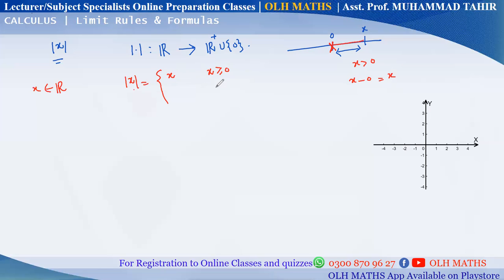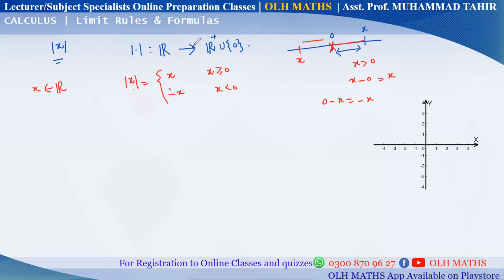And if x is negative, then to find the distance from x back to zero — the distance of x from zero — it is zero minus x, which gives minus x. So the absolute value of x is minus x when x is negative.